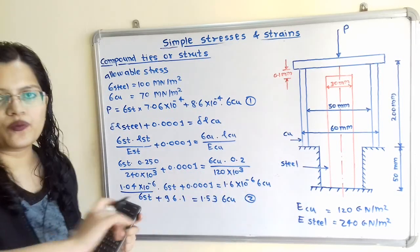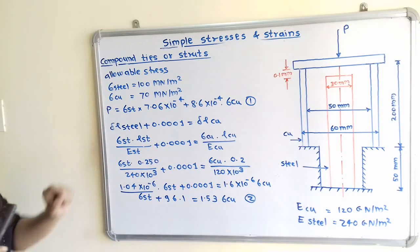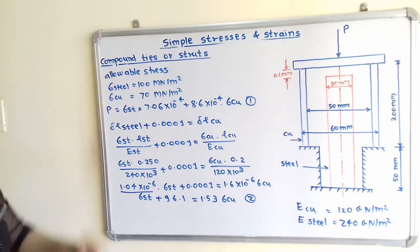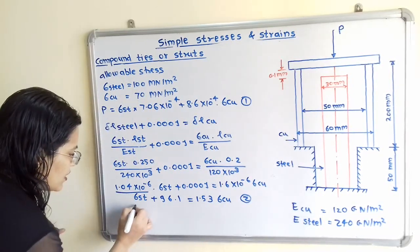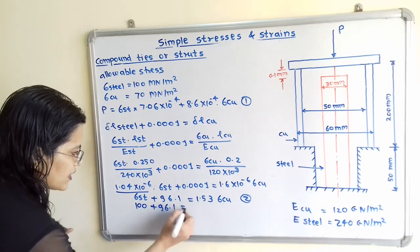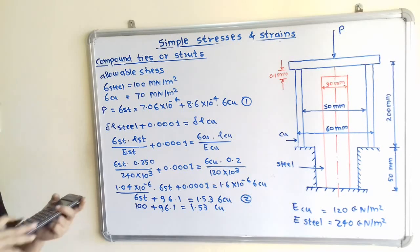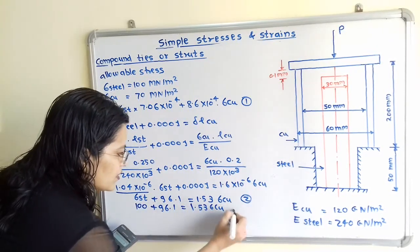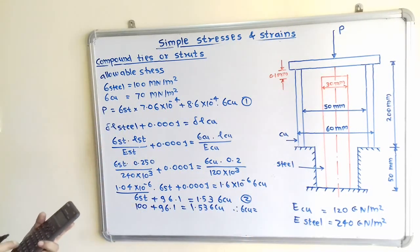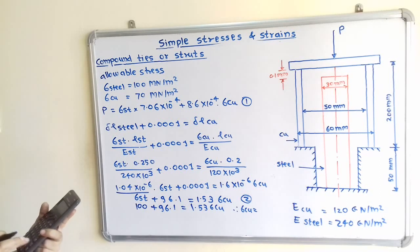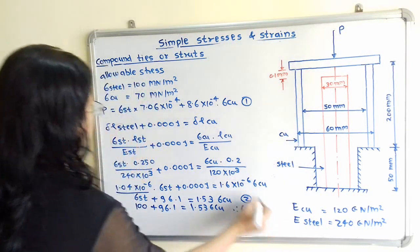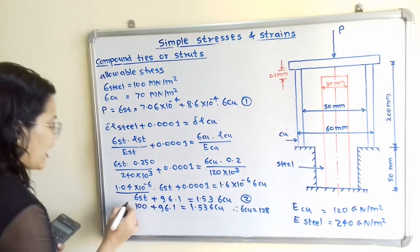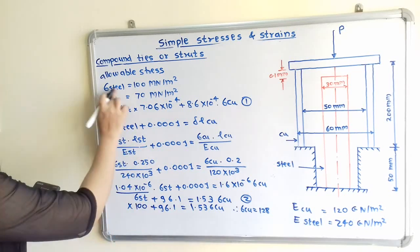Now we apply the allowable stresses. First, assume sigma_steel = 100 MN/m². Substituting into equation 2: 100 + 96.1 = 1.53 × sigma_copper, giving sigma_copper = 196 / 1.53 = 128 MN/m². But the allowable stress for copper is only 70 MN/m², so we cannot use sigma_steel = 100.